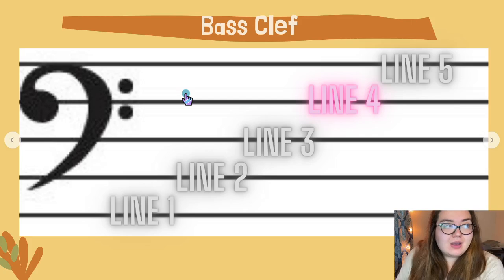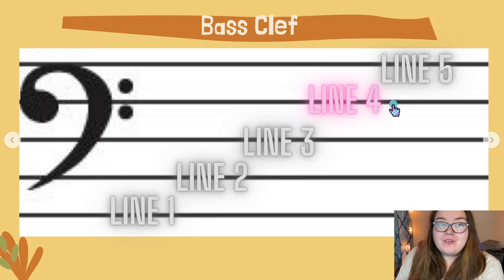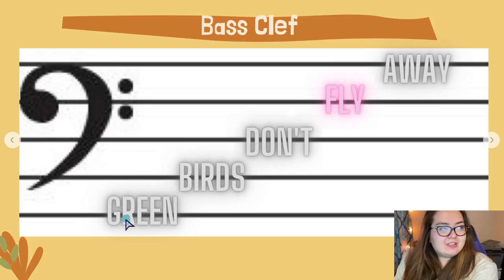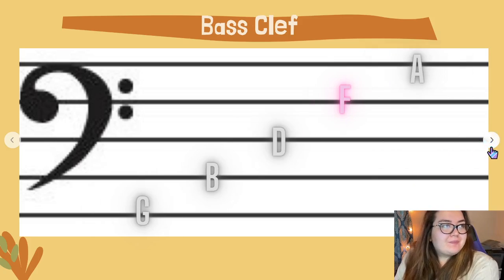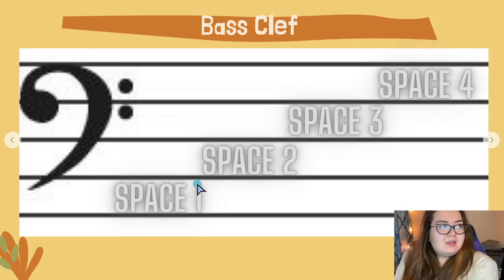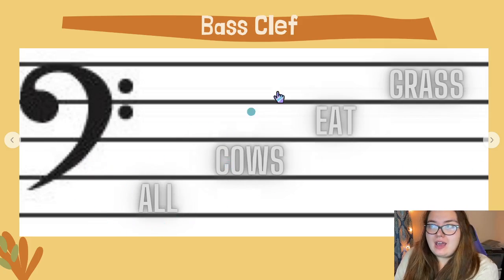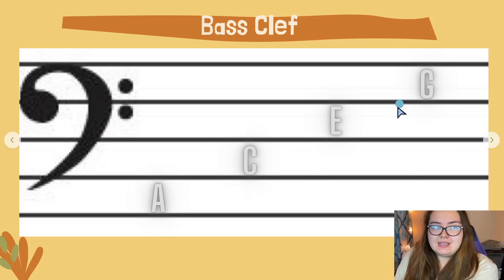Not everyone writes bass clef the correct way, but when it's written correctly, it looks like this. Line four is the F clef, giving it its name. The way to remember the lines of the bass clef is: Good Birds Don't Fly Away — G, B, D, F, A. For spaces, we have space one, two, three, and four, standing for All Cows Eat Grass — A, C, E, G.